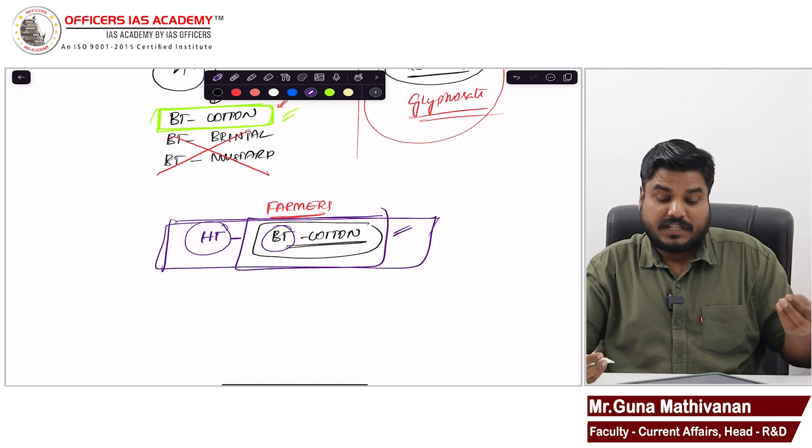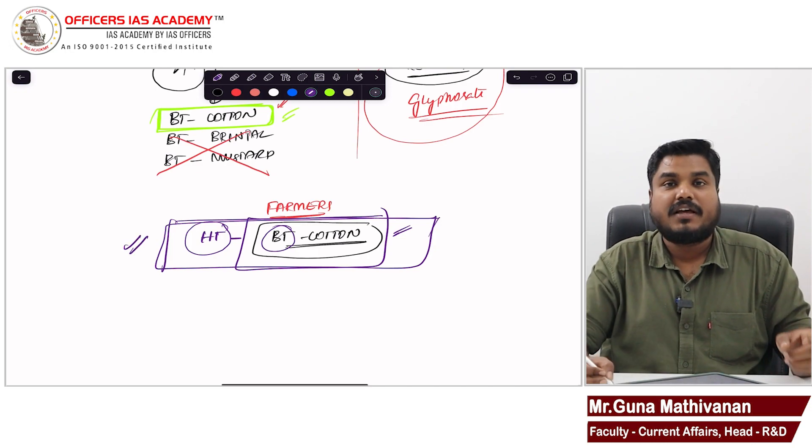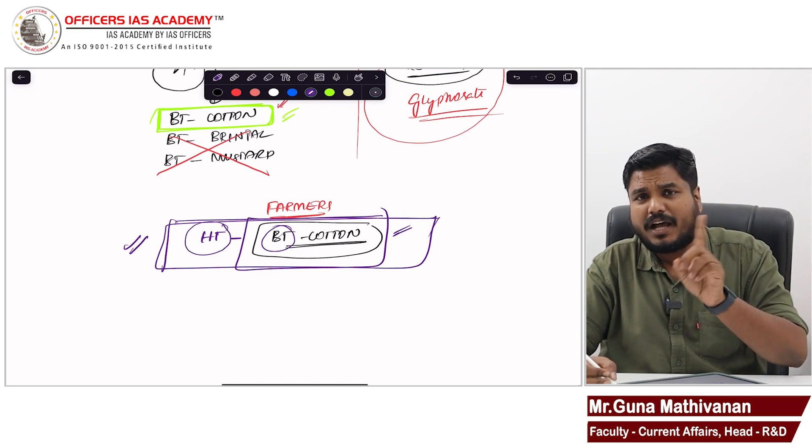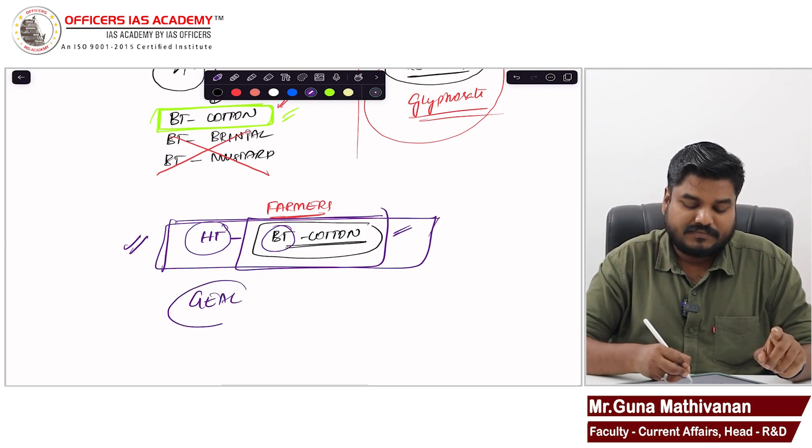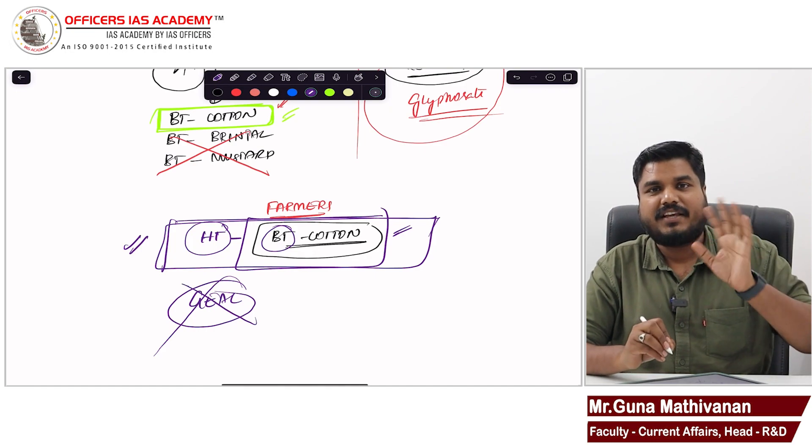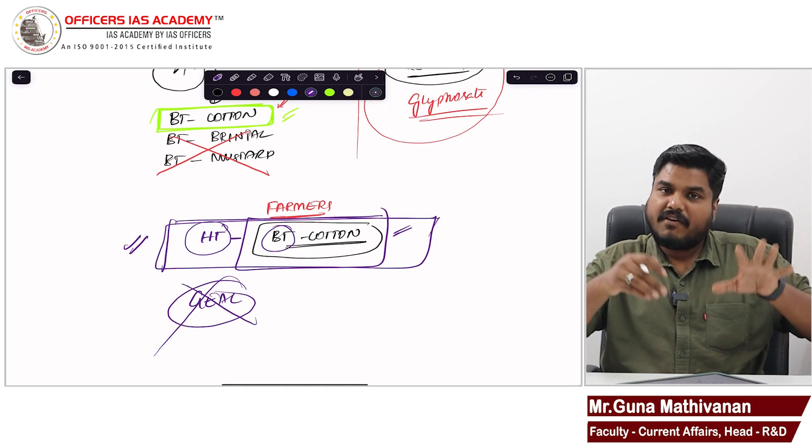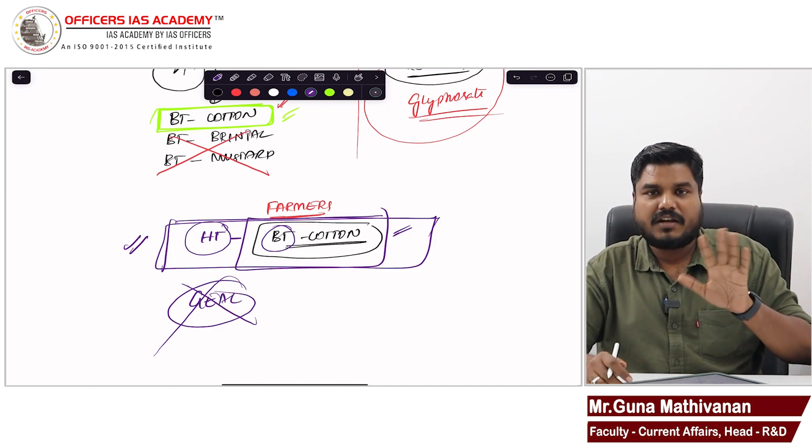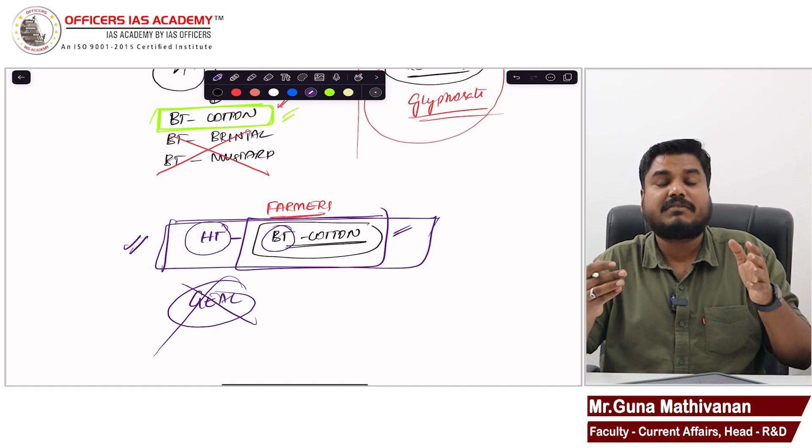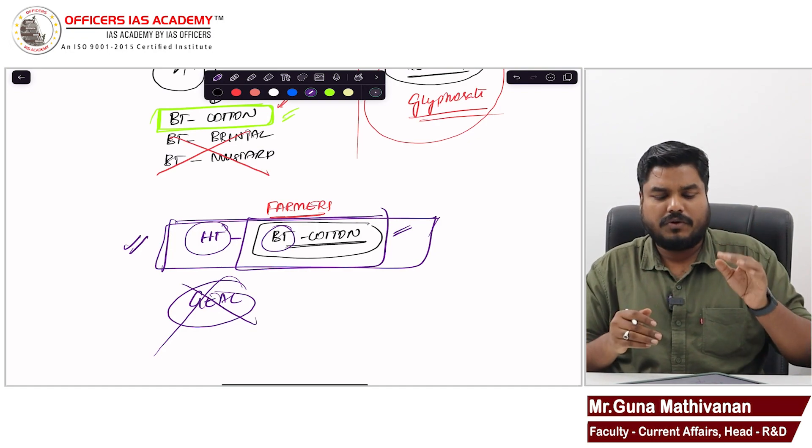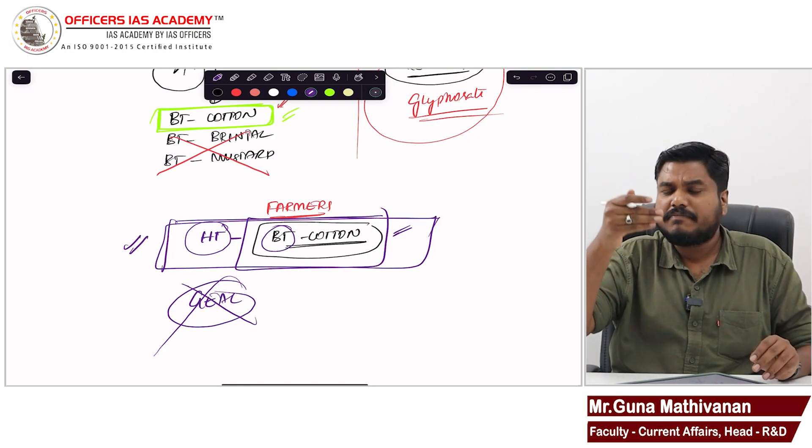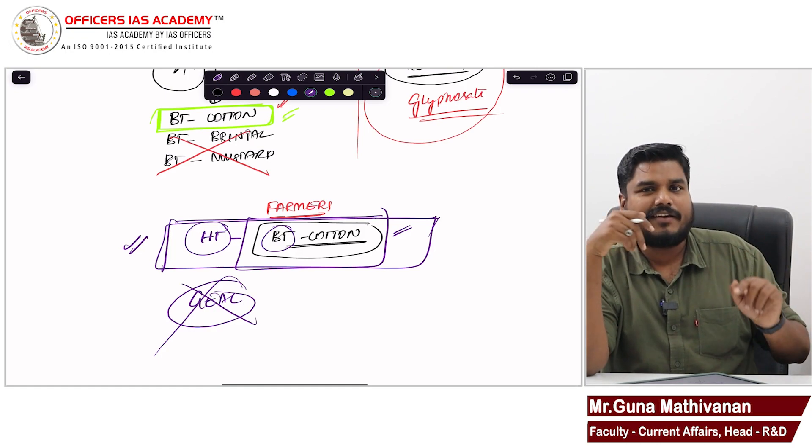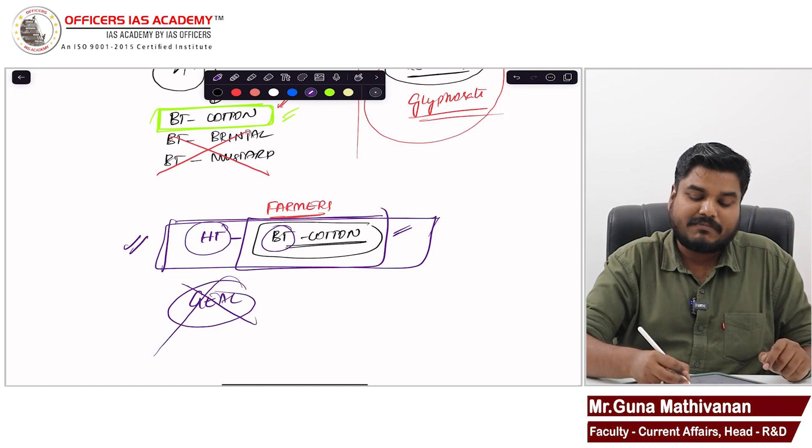What farmers said is do some more modification and come up with a new variety which can withstand the herbicides. So researchers came with HT Bt cotton. You should know this HT Bt cotton is not approved by GEAC. It is not approved. So we have this HT Bt cotton seeds available in the world. But however, in India, we are not allowed to grow. But farmers are protesting that government please allow this HT Bt cotton to be grown in India.